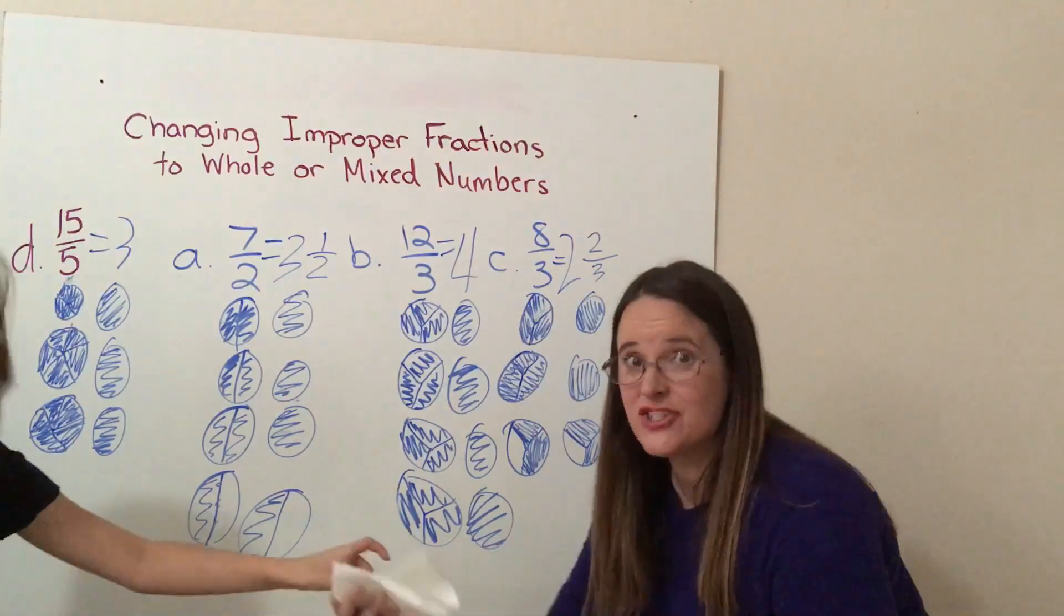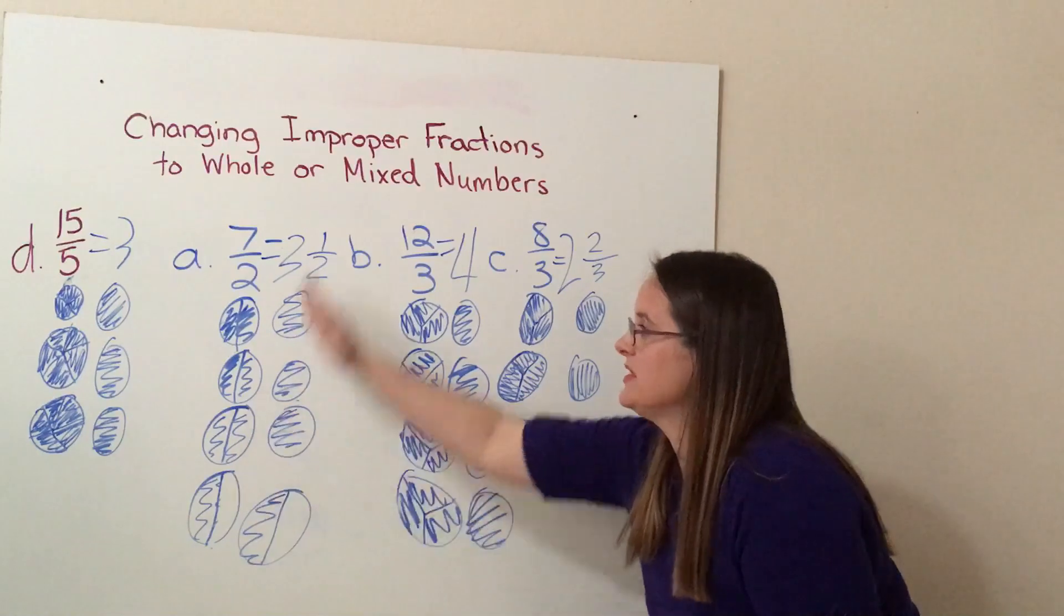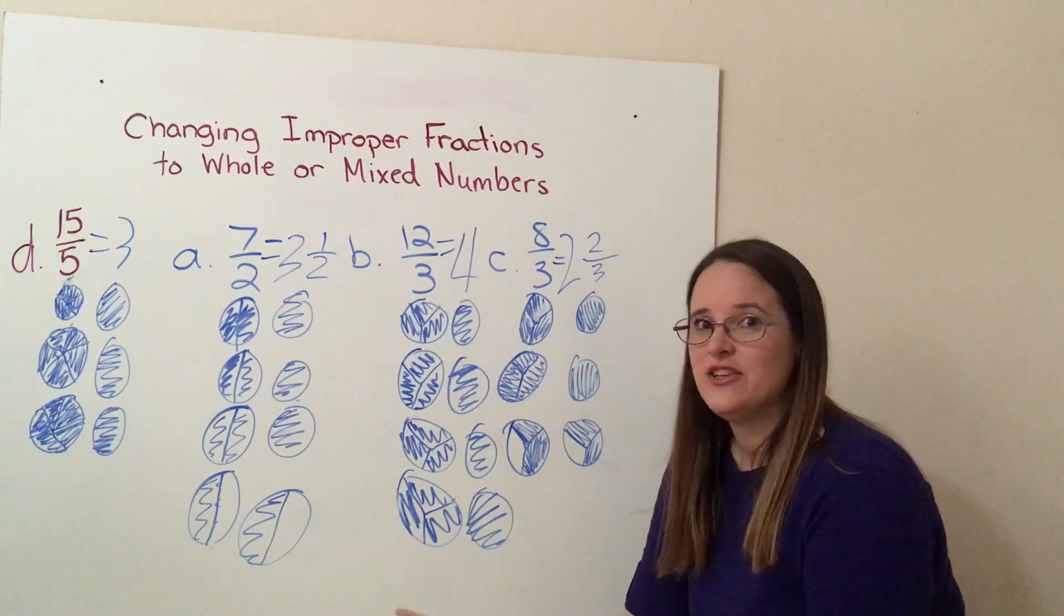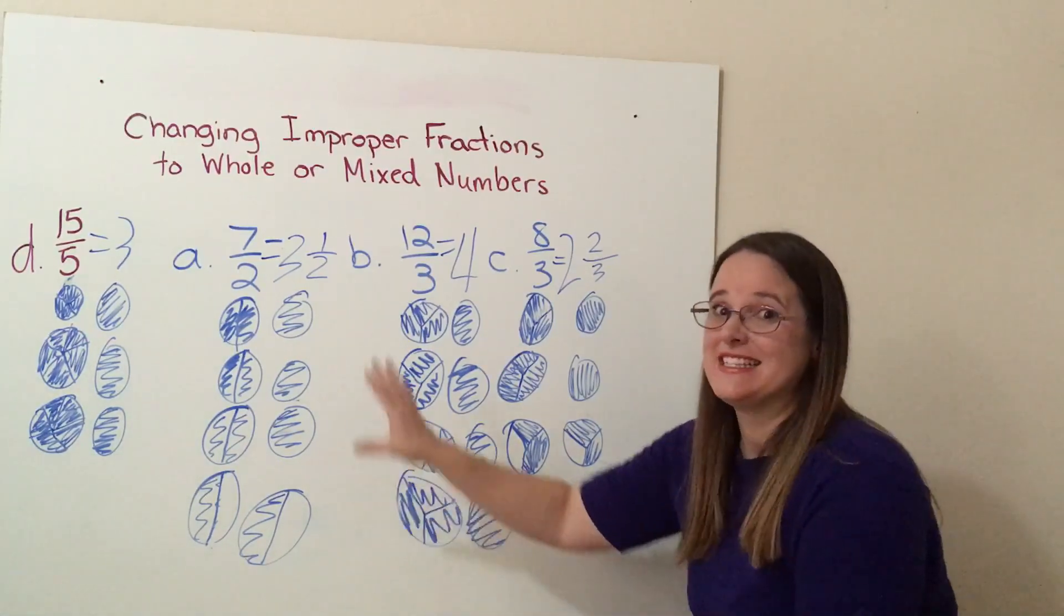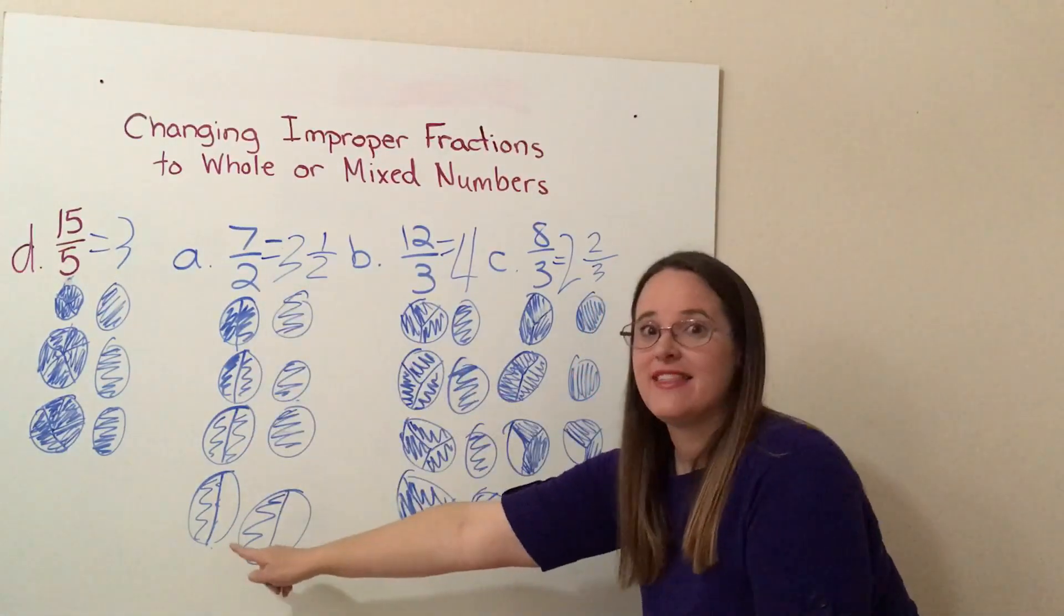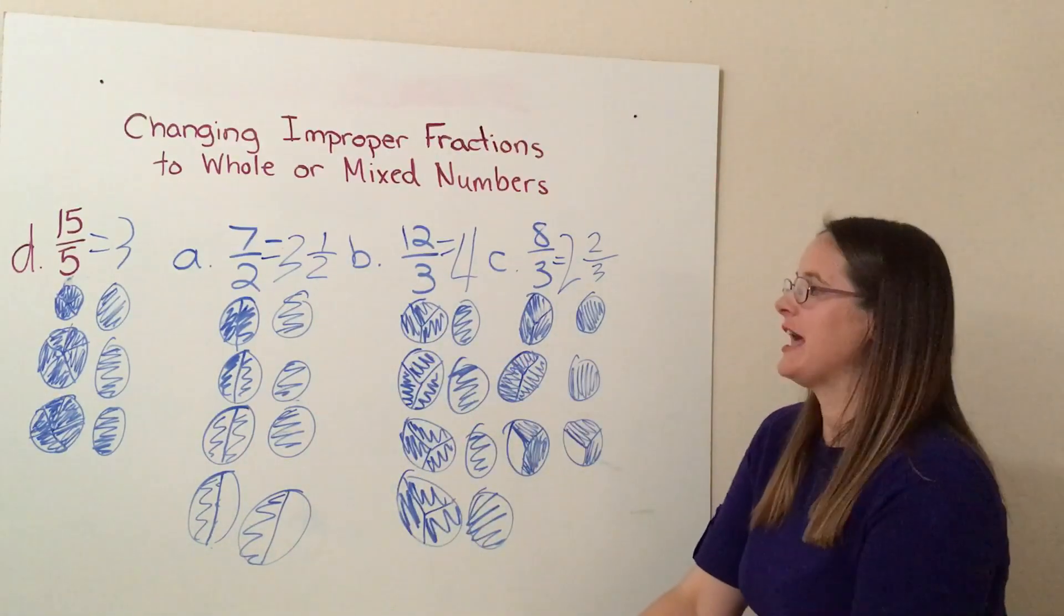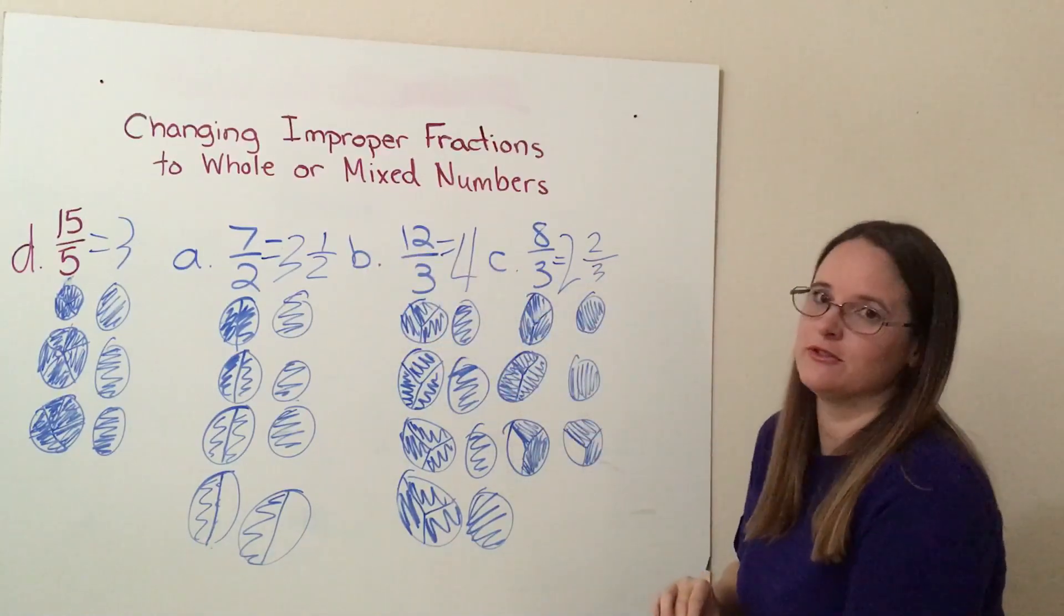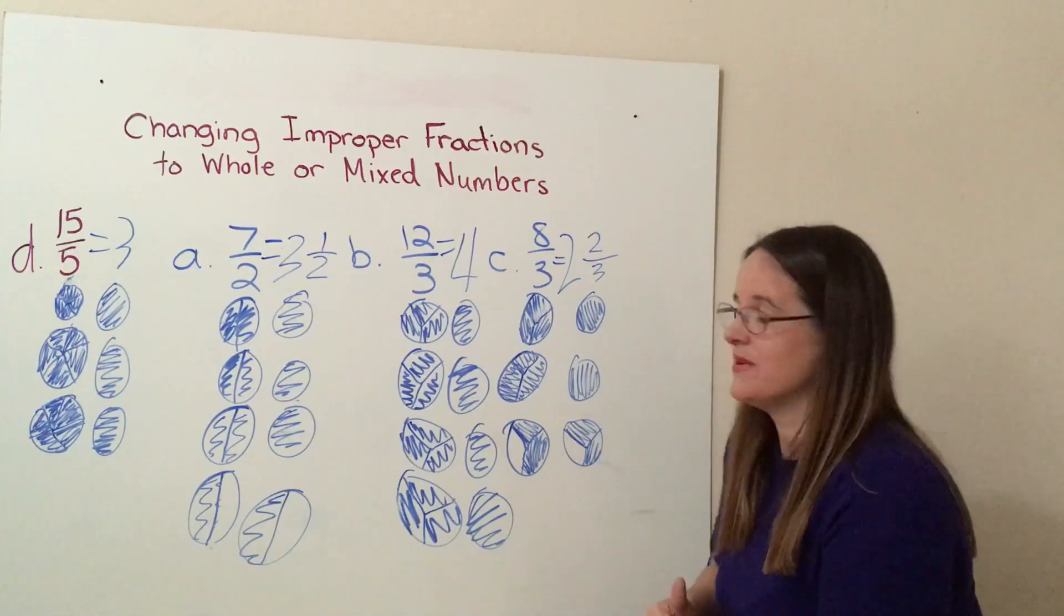Okay, so I want to start by pointing out that Nyla drew two sets of circles for each equation. If you are in my class and you take the Saxon math tests with me, the expectation is that you draw both sets of circles to show that this is, in fact, the same as this. Show your work, absolutely. So, this is perfect, it's absolutely correct. If this is the answer that you got, awesome, you are doing great with this skill.